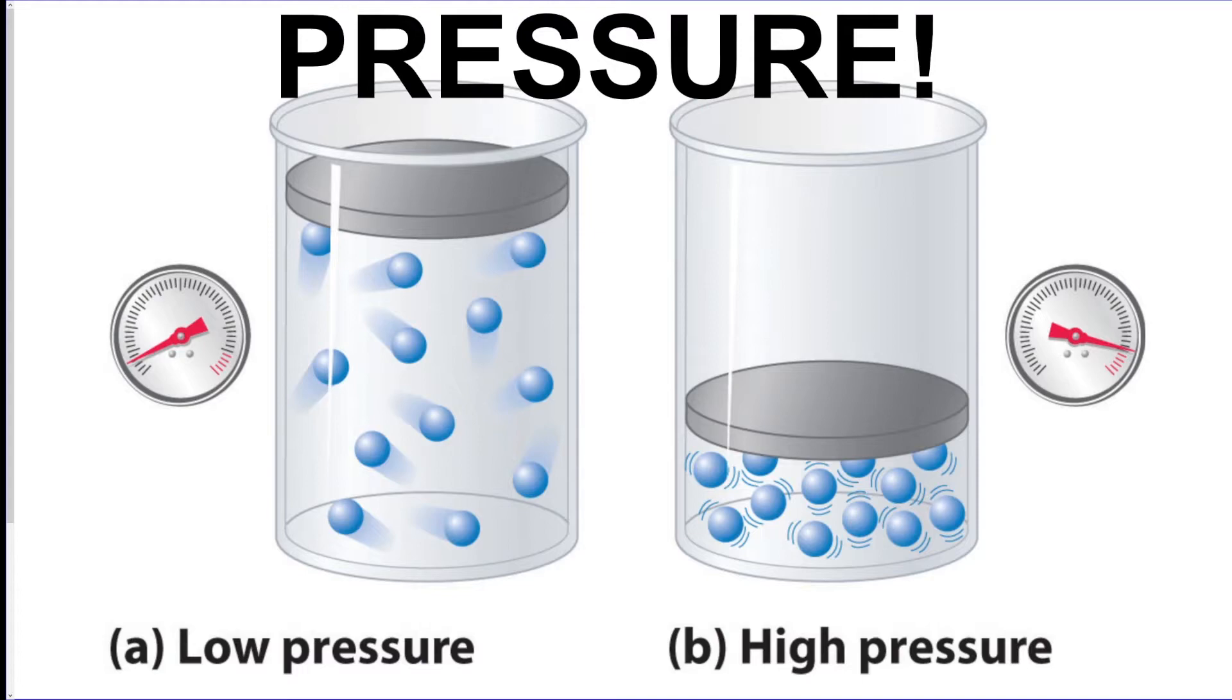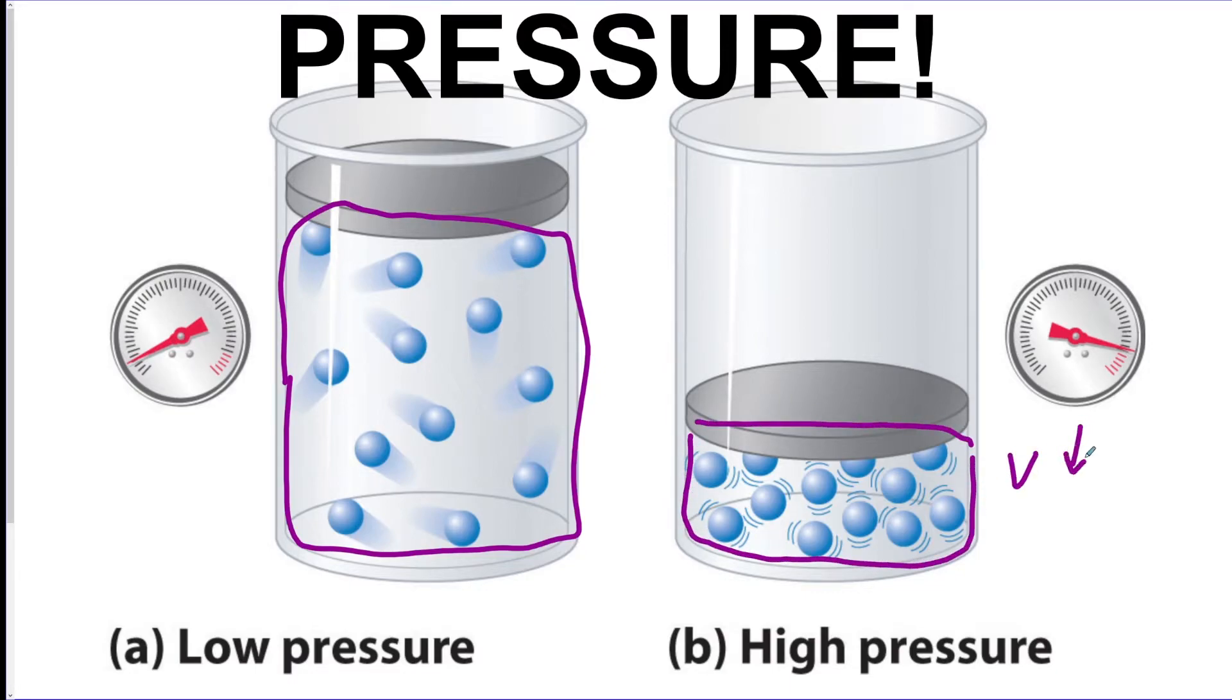Now if we want to pressurize something, on the left you can see a can with sort of a piston plate on the top and there's one, two, three, four, six, nine, twelve molecules inside of it. Now look, these molecules have a lot of space.